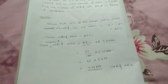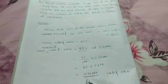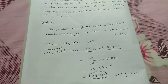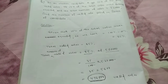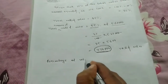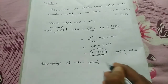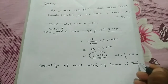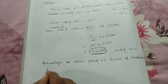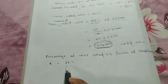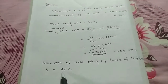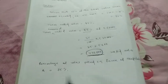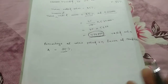Now we have the question: candidate A got 75% of the valid votes. The percentage of votes polled in favour of candidate A is equal to 75%. So candidate A received 75% of the valid votes polled.